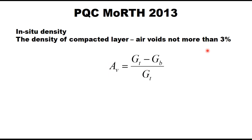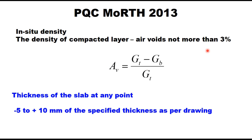The thickness of the slab: the permitted variation at any point is minus 5 mm to plus 10 mm of the specified thickness as per drawing. A thickness deficiency of more than 5 mm may be accepted and paid at a reduced rate, but in no case shall the thickness deficiency be more than 10 mm.